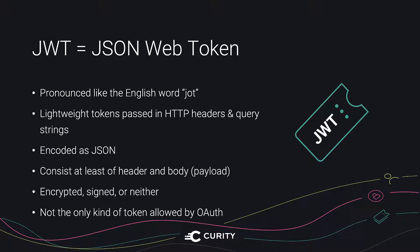Let's make a quick introduction into JWTs, so we're all on the same page. JSON Web Tokens are lightweight tokens which are meant to be passed as HTTP headers or in query strings, and they're encoded as JSON. Each token consists of different parts depending on the type of the token, but they will always have at least the header and some payload in the body. JSON Web Tokens can be encrypted, signed, or neither. Encrypted tokens are known as JWE, and signed tokens are called JWS. Let's also remember that although they're very popular, they're not the only kind of tokens allowed by the OAuth specification.